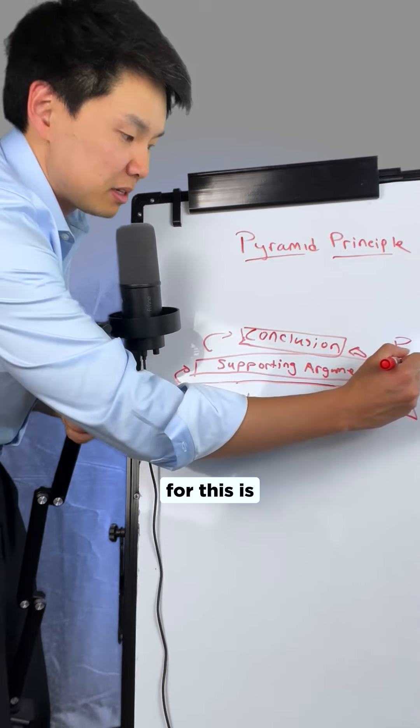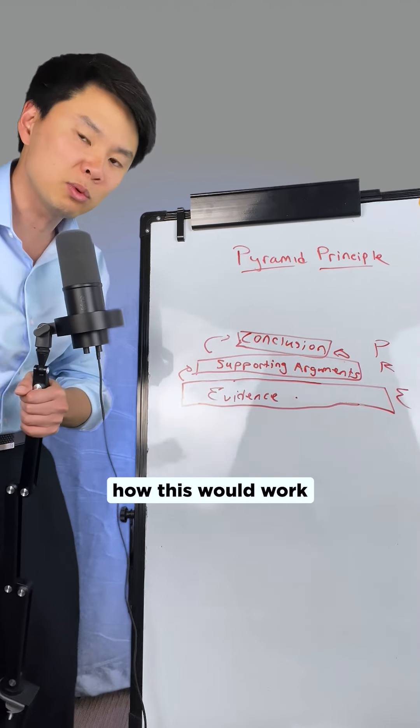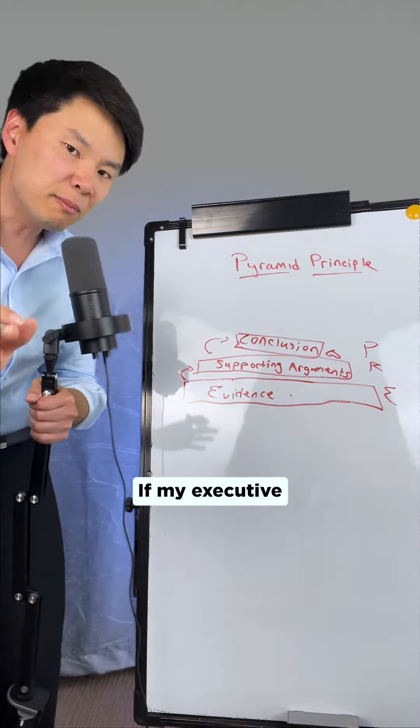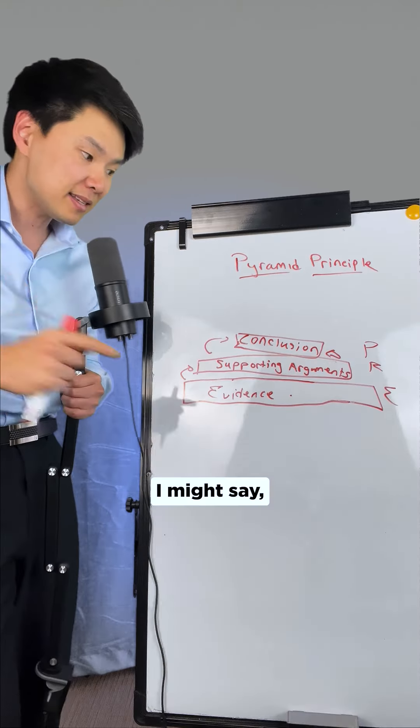Another format for this is P-R-E. We call this point, reason, example. So let me demonstrate how this would work in a hypothetical scenario. If my executive were to ask me, which partners do you think we should prioritize and why, I might say: